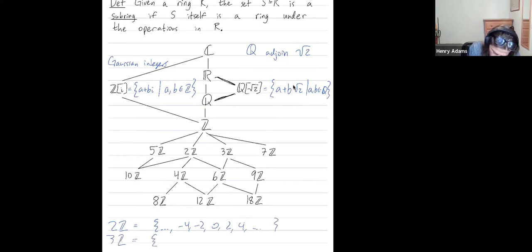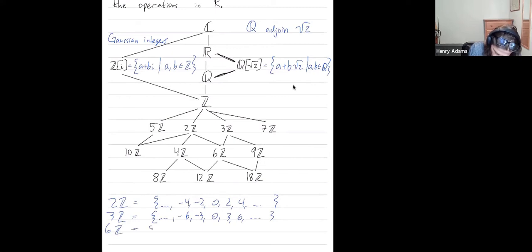3z had all elements divisible by 3, so negative 6, negative 3, 0, 3, 6. 6z has all numbers divisible by 6, so negative 12, negative 6, 0, 6, 12. And so you can see that 6z is a ring contained both inside 3z and 2z. So that's why I have these inclusions. And 2z and 3z are rings contained inside the integers.